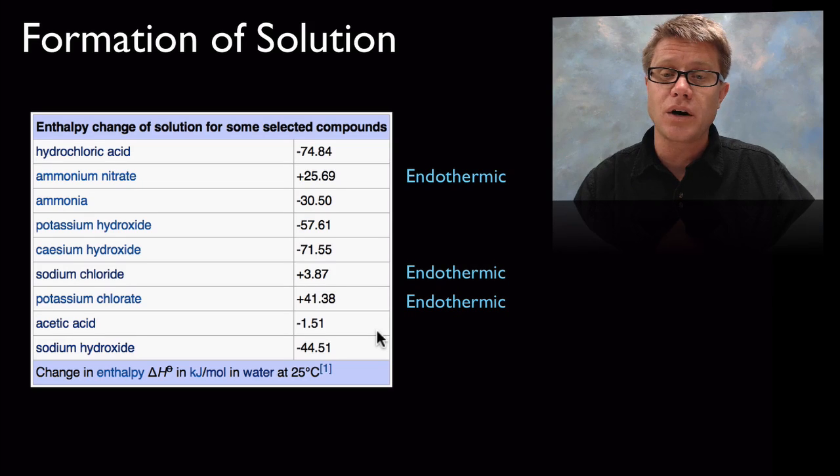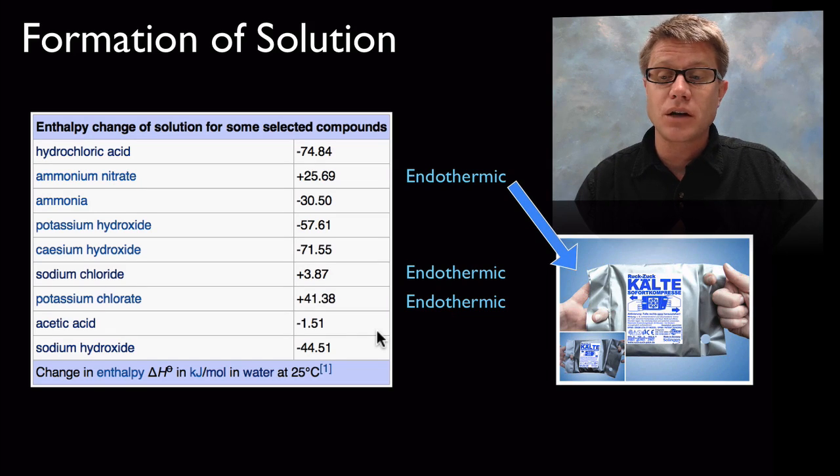ammonium nitrate, if we add that to water, it's going to be an endothermic process. That means it's going to take in energy. And so we could use that ammonium nitrate and water to make these instant cold packs. What we're doing is just combining them together. It's taking in heat from the surroundings and it feels really cold.